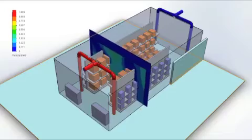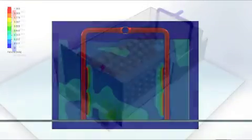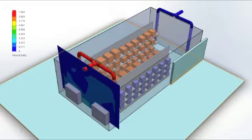This can also be seen by the cut plots which show the velocity of the air down through the central aisle of the battery charging area.